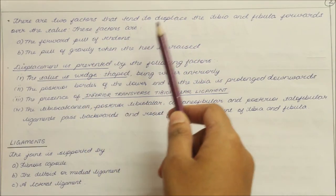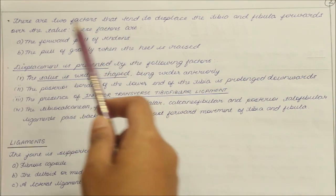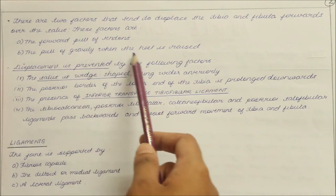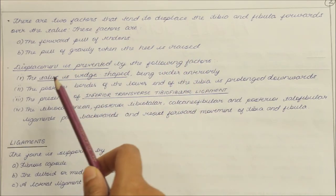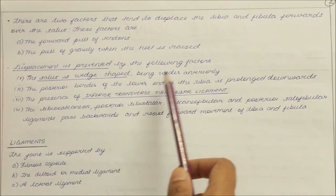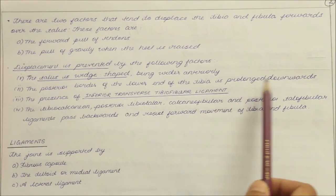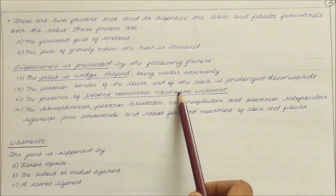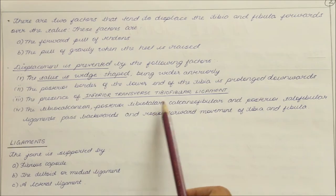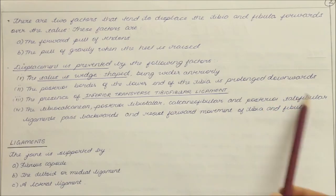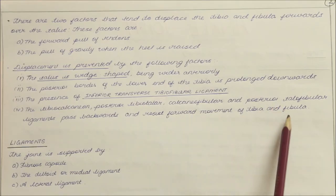Additionally, the tibiocalcanean, posterior tibiotalar, calcaneofibular and posterior talofibular ligaments pass backwards and resist forward movement of the tibia and fibula.